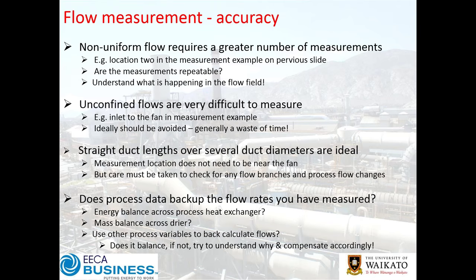Better to get a decent measurement in a contained duct, several duct diameters away from obstructions and corners. Be careful of flow branches and process flow changes in relation to where your measurement is taken. Also look for process data backup: does your measured flow rate ring true in terms of a mass and energy balance? Across a heat exchanger, a dryer — what other process variables can you use to verify your measurements are reasonable?